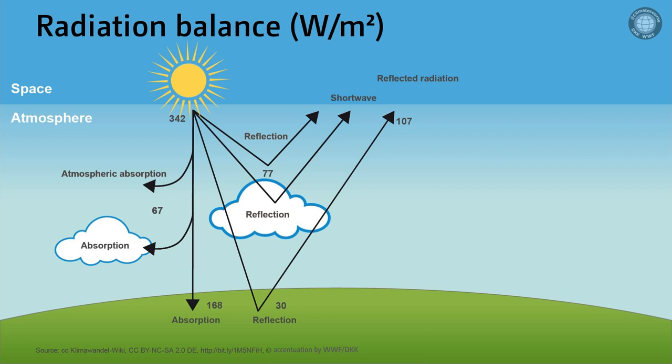This is the shortwave part of the radiation balance describing what happens to the sunlight. The longwave part of the radiation balance is on the right side of the illustration. It describes the infrared radiation that is emitted by the Earth's surface, a total of 390 watts per meter squared, of which 350 watts per meter squared are absorbed by the atmospheric components, the greenhouse gases.